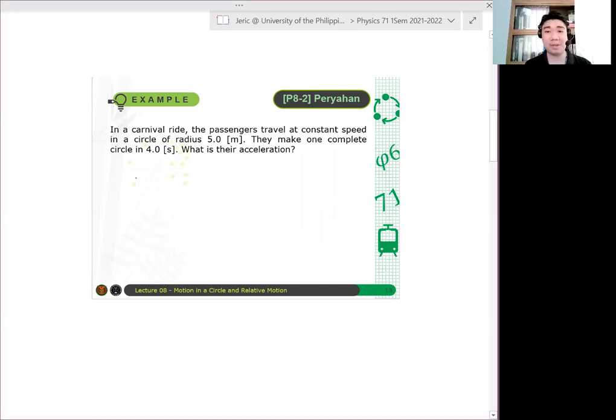So I'll be giving you maybe a minute to solve this problem. There is a formula for acceleration in terms of the period. Given here one complete revolution, therefore the period is given. It's not the velocity that's given, it's the period.